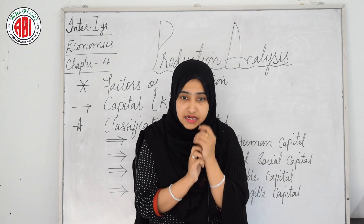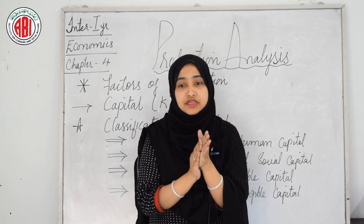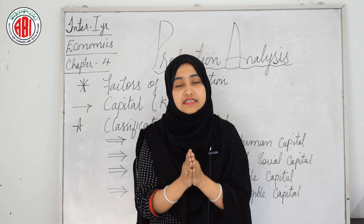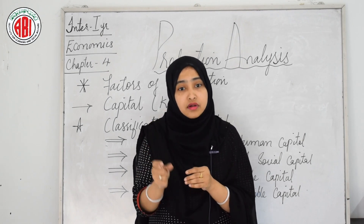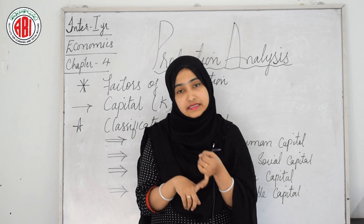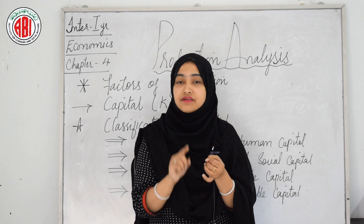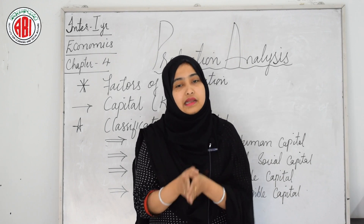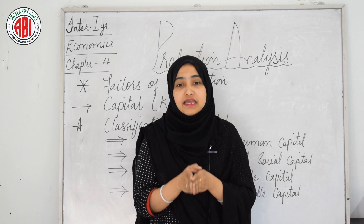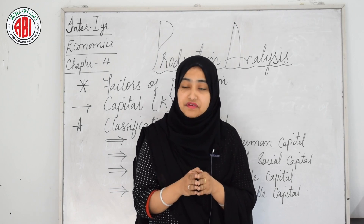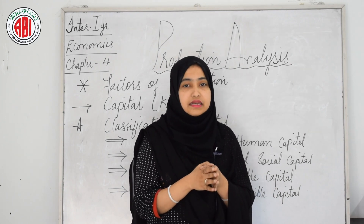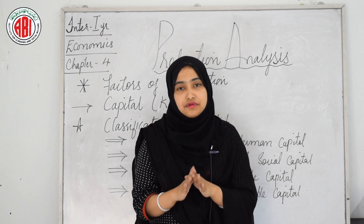Fixed capital refers to expenditure on machinery and buildings in the production process, while the amount spent on purchase of raw materials, daily wages paid to laborers, and electricity charges are known as variable capital. Tangible capital may be perceived by the senses, whereas intangible capital is in the form of certain benefits and rights — for example, goodwill or patents.